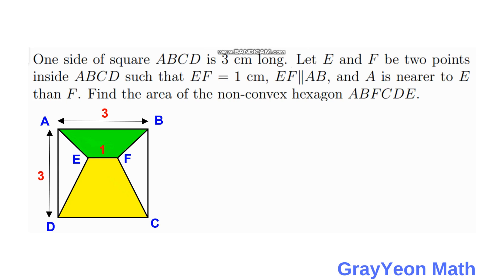EF is parallel to AB and A is nearer to E than F. Find the area of the non-convex hexagon ABFCDE. We've already drawn the lines inside the square which measures 3 by 3 cm.